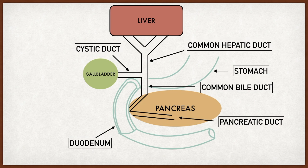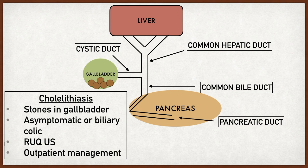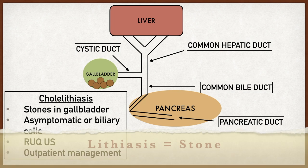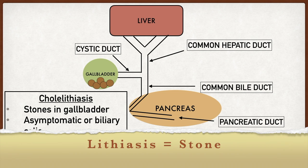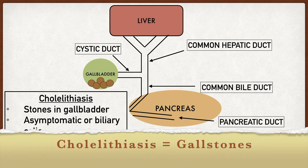Now that we have a good understanding of the anatomy and bile, let's walk through the different gallbladder diseases. Let's start with cholelithiasis. Breaking down the word: chole means gallbladder or bile, and lithiasis means stone — think of nephrolithiasis, which is kidney stones. So cholelithiasis means stones in the gallbladder, or simply put, gallstones.